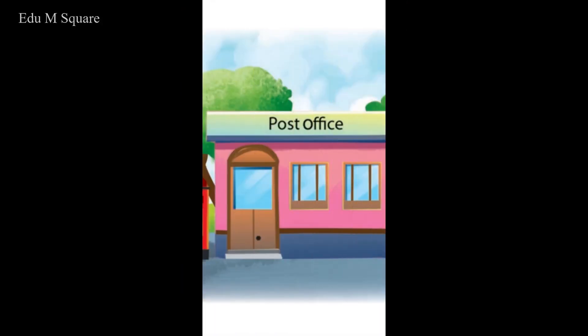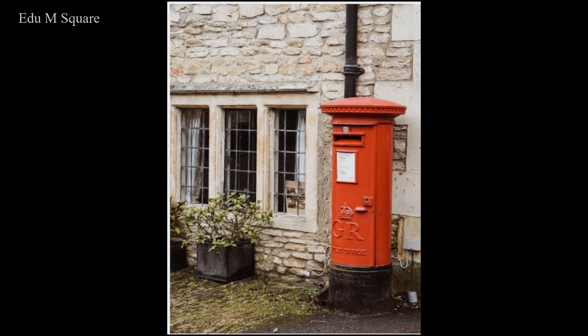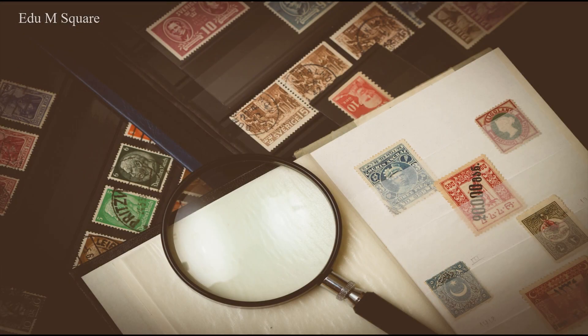Next, a post office. A post office is a place where we go to post letters or parcels. We can drop letters in a letter box. We can also buy stamps from there. A post carrier delivers letters or parcels to us.